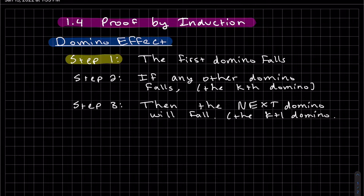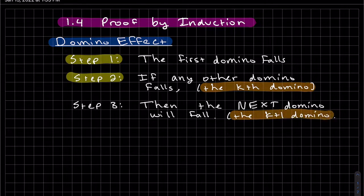Our first step on the domino effect is that the first domino must fall. Our second step is that if any other domino falls in the lineup, basically if the kth domino falls, well then what happens next is the next domino will fall, and so on and so on.